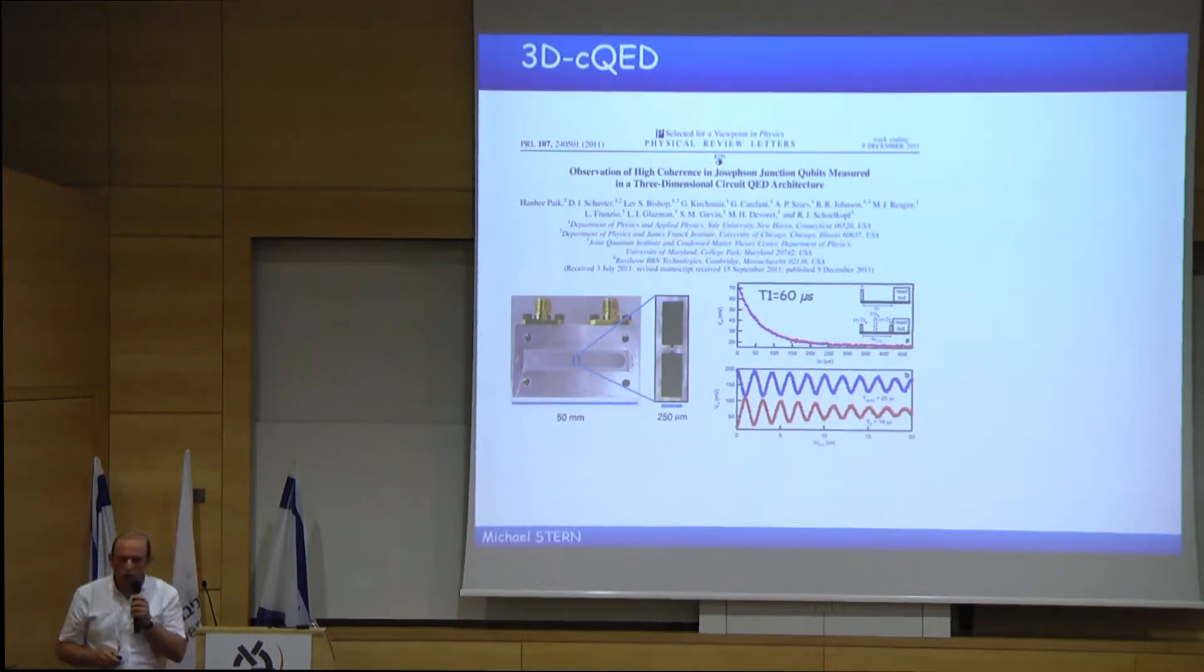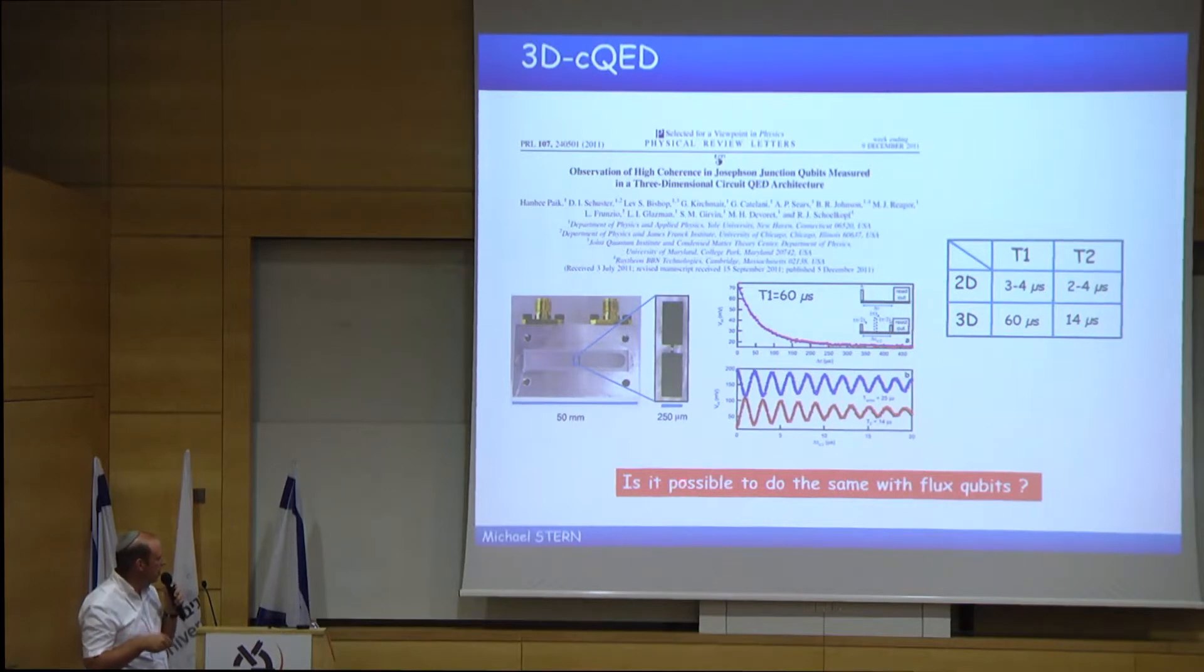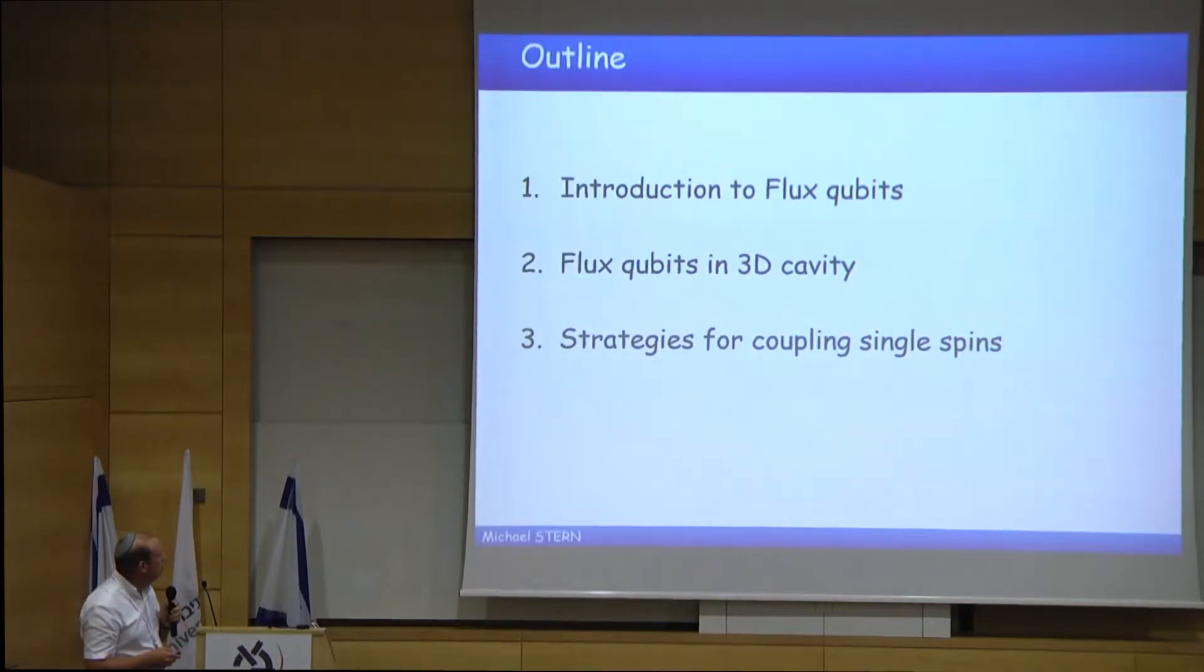So how can I increase the coherence time of flux qubit? Well, in fact, there has been, in 2011, quite a big revolution in the field of superconducting qubits. The discovery that putting the superconducting qubits, a transmon inside of a three-dimensional cavity, helped to increase the coherence time and the relaxation times by almost one order of magnitude. This is a question that we will answer to that. Is it possible to do the same with flux qubit?